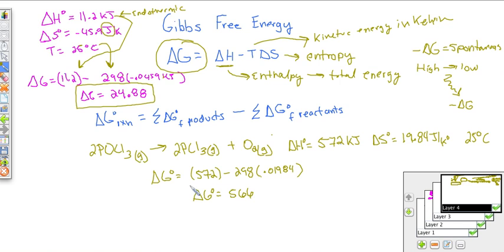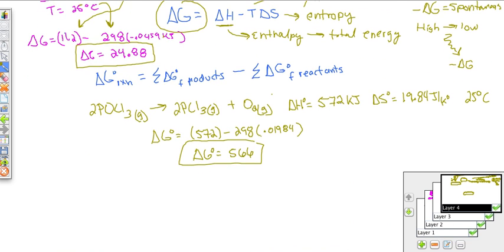So let's go ahead and plug that in. We plug that in. And what we find is that 572 is our H minus 298 times 0.01984. And we have to, of course, convert that to kilojoules because it's in joules right here. We want it to work out. Our total change in free energy is a positive 566. So what can we assume? Well, a non-spontaneous process because free energy is positive.